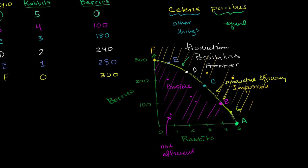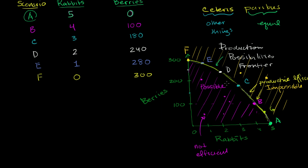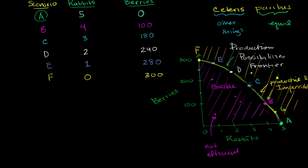Another way to think about it is that as soon as you're at any point on that curve, if you want any more of one of these things, you have to give up some of the other. For example, if you're at point C and you want more rabbits, you're going to have to give up some berries. Or if you're at point C and you want more berries, you're going to have to give up some rabbits. And that's true of any point on the production possibilities frontier.